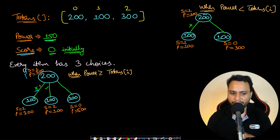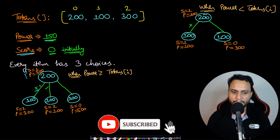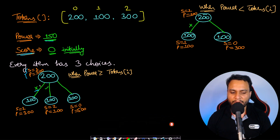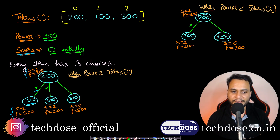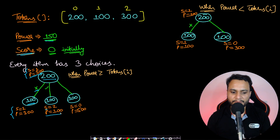First choice: don't play — neither face up nor face down — and move on to the next item with score and power unchanged. Second choice: increase score, which is possible if current power is at least the current token. Here it is possible, so score increases by 1 and power decrements by 200.